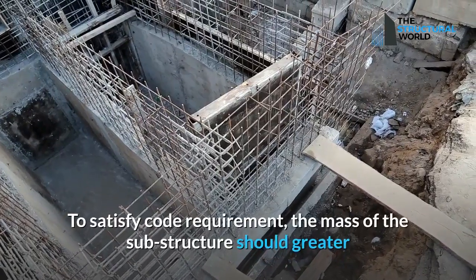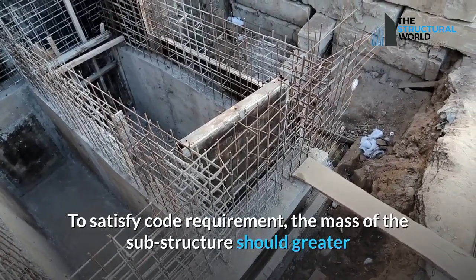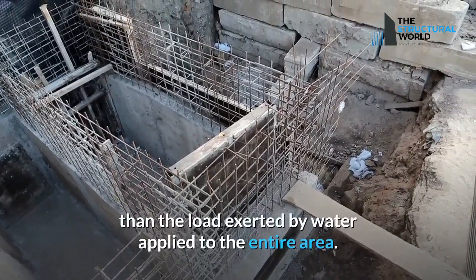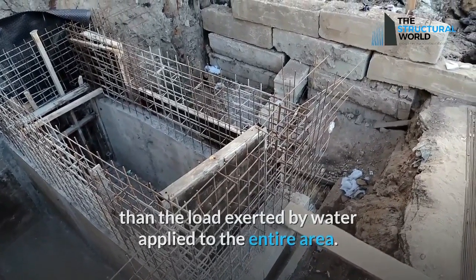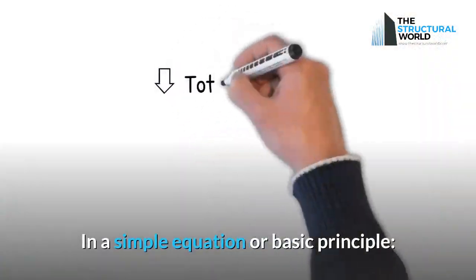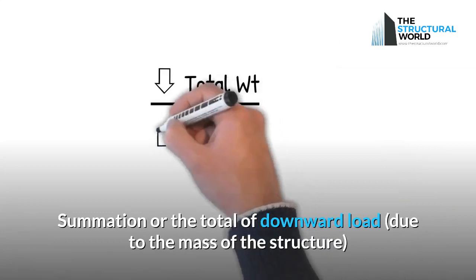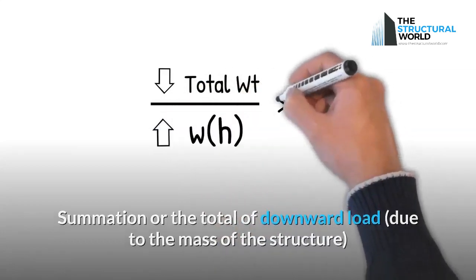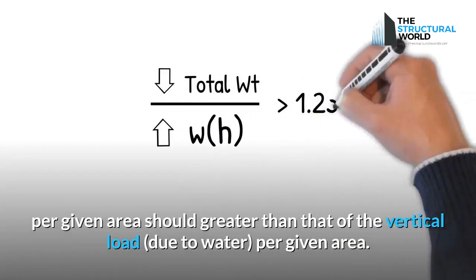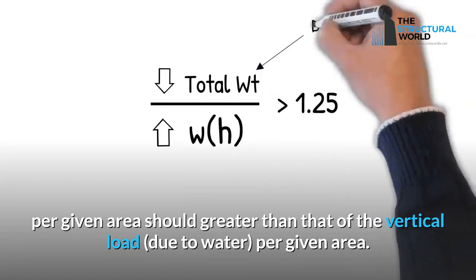How to perform a hydrostatic uplift check? To satisfy code requirements, the mass of the substructure should be greater than the load exerted by water applied to the entire area. In a simple equation or basic principle, the summation or total of downward load due to the mass of the structure per given area should be greater than that of the vertical load due to water per given area.